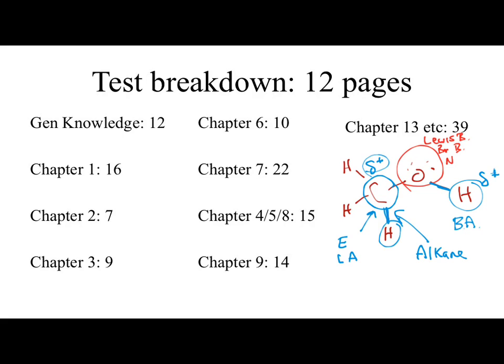Chapter 2 is worth about 7 points. That's where you're looking at your Lewis or acid definitions and some intermolecular force definitions as well. Most of the questions from Chapter 2 have already been discussed back in the general knowledge. Chapter 3 is where we looked at cyclohexanes, Newman projections. Chapter 6 was your stereochemistry — you get about 10 points there.